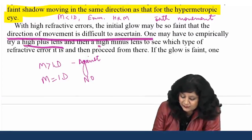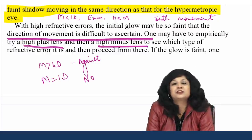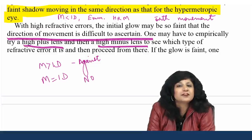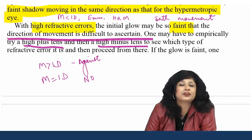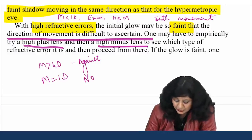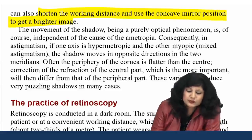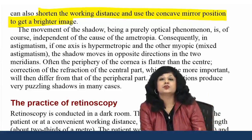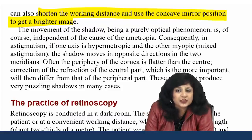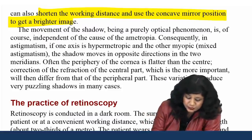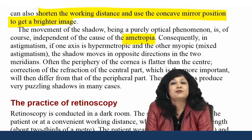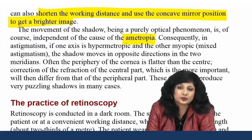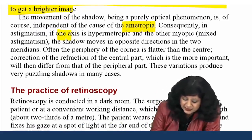There are three major interpretations in clinical retinoscopy. First, if the movement is in the opposite direction — this is against movement — it occurs when the patient has myopia of more than 1 diopter; use a concave lens to neutralize it. Second, when the movement is in the same direction — with movement. Third, no movement or no shadow is seen. If myopia is more than 1 diopter, you get against movement; you can use a concave mirror to neutralize it.